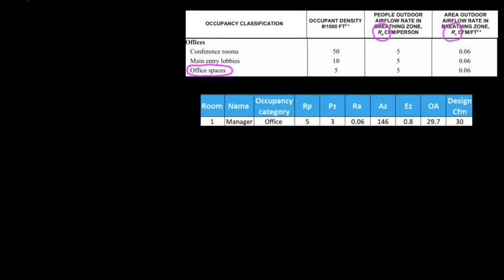This is very important because in any mechanical design, outside air is incredibly important. Whenever it's a commercial building, what we need to do is focus on what the category is going to be — that would be step number one. Usually what happens is that the architect provides you with the architectural drawings, and if you don't have architectural drawings, you can always go to the job site and make a survey, take pictures, and see how it's laid out.